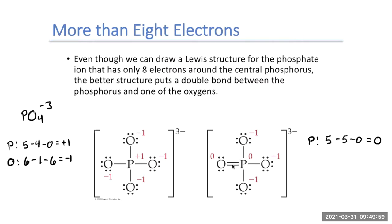The double-bonded oxygen in the expanded structure: column six, minus two bonds, minus four lone pair electrons — also gives zero. By decreasing the number of formal charges in the structure, we've created a slightly more stable structure.